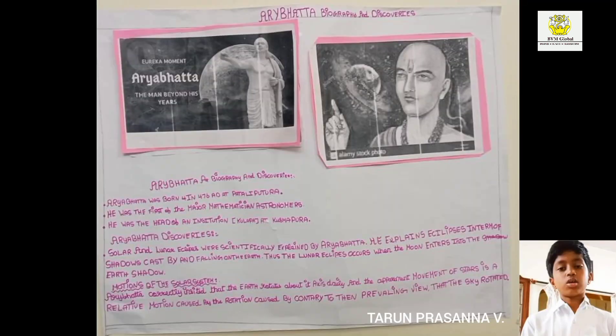Aryabhata's biography and discoveries: Aryabhata was born in 476 AD at Pataliputra. He was the first of the major mathematician-astronomers, and editor of astronomical texts. Among Aryabhata's discoveries, solar and lunar eclipses were scientifically explained by him.